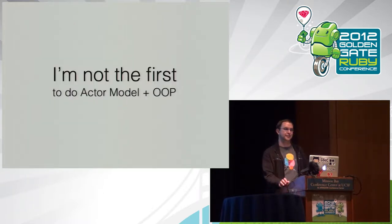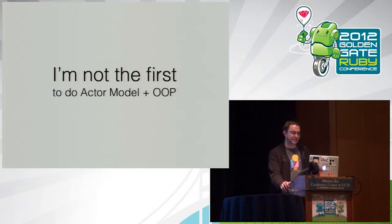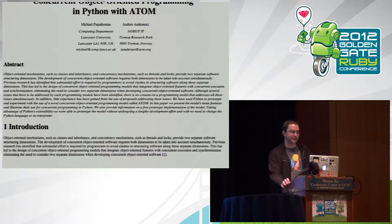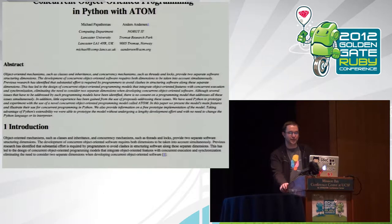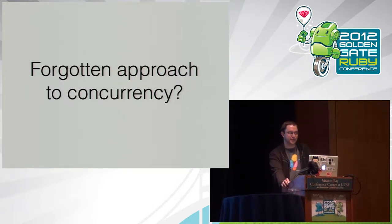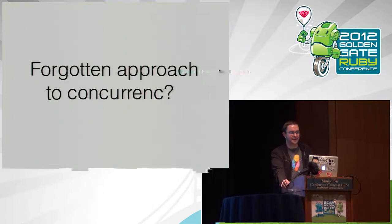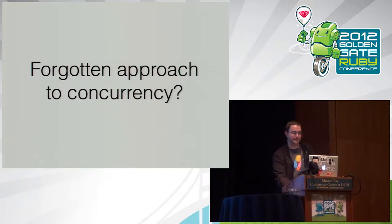I'm not the first person to try to combine these concepts — this was actually a major research topic in the late 1980s and early 1990s. The main project I found that was really similar to Celluloid was called Atom, developed in Python in 1997 as a PhD thesis. Unfortunately, they never really went anywhere with it — I think they were a little too early. Combining the actor model and object-oriented programming is kind of this forgotten solution. When you hear about concurrency these days, you hear about functional programming or languages like Go, and nobody's really talking about actor-based object-oriented programming.